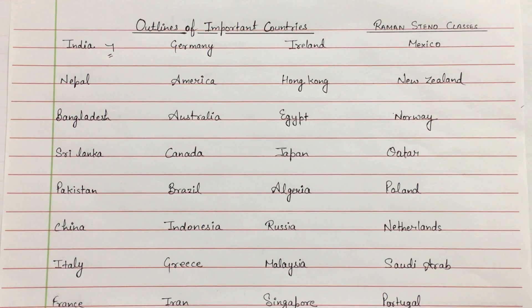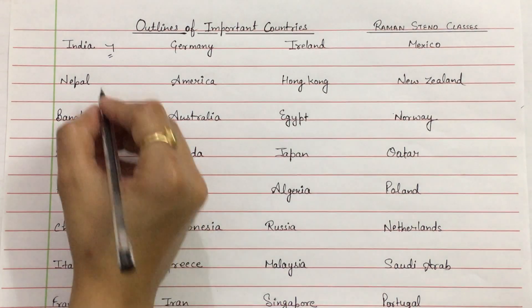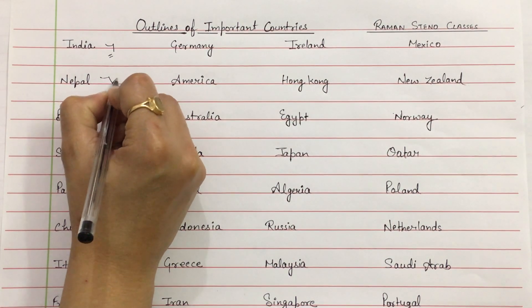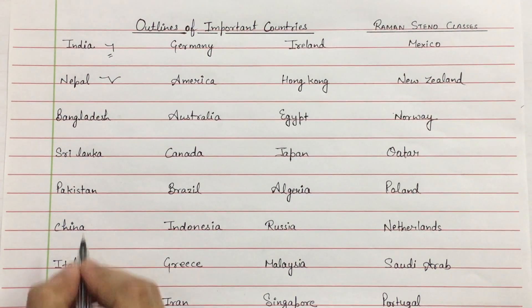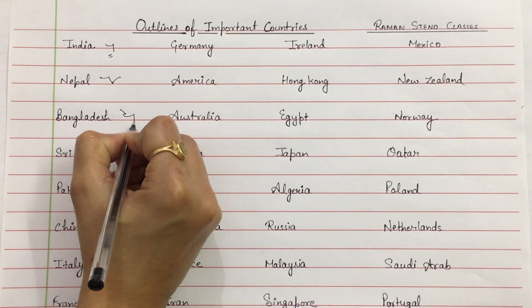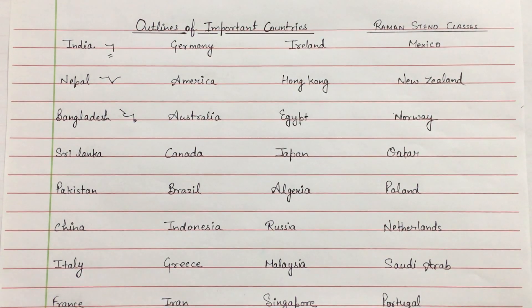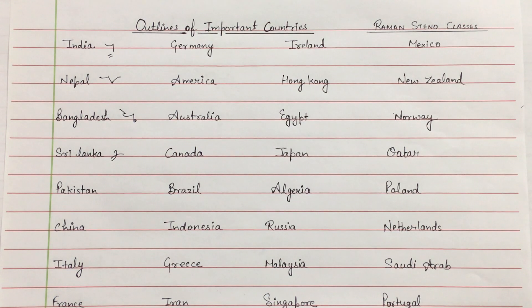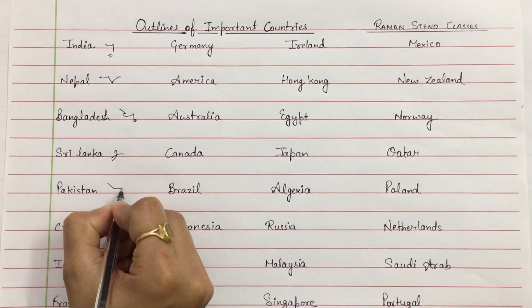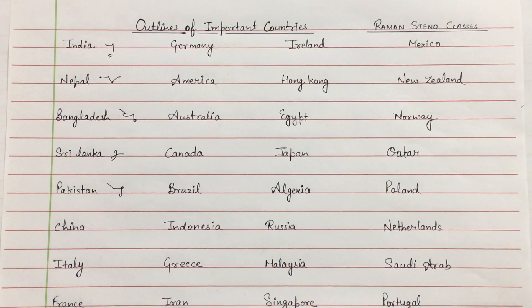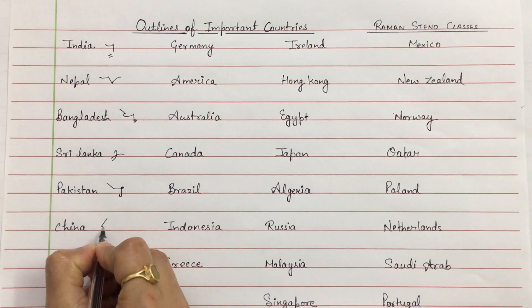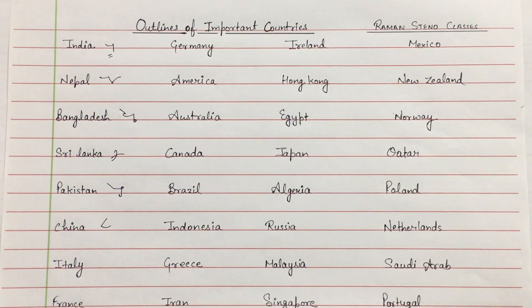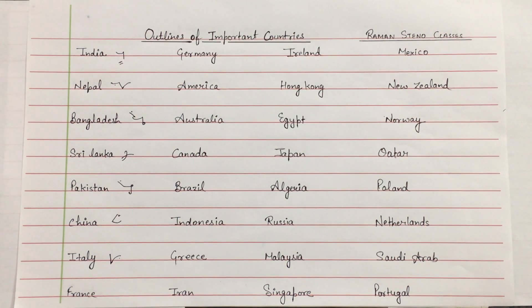You can easily identify any noun. Nepal — on the line. Bangladesh. Sri Lanka. Pakistan. China. Italy.